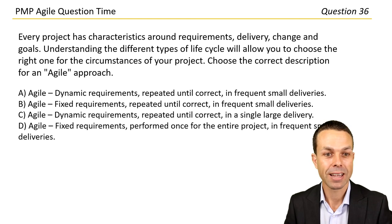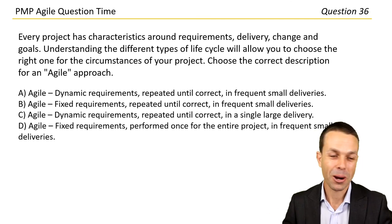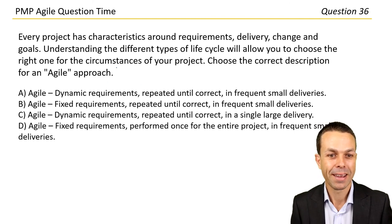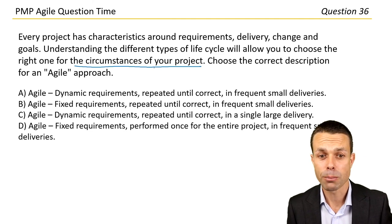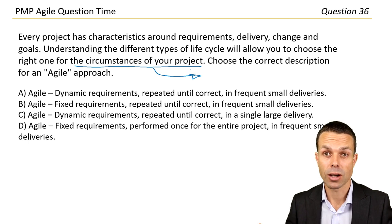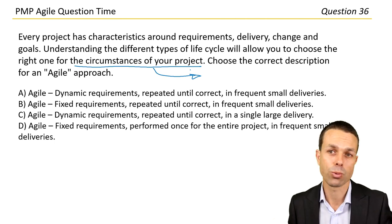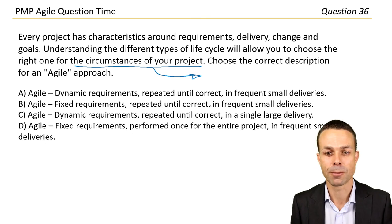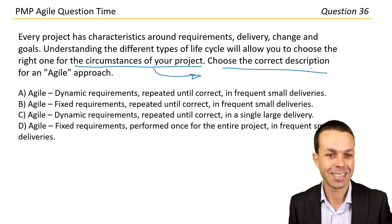Every project has characteristics around requirements, delivery, change, and goals. Understanding the different types of life cycle allows you to choose the right one for your project's circumstances — every project, organization, product, culture, and team will affect how the project is delivered. Choose the correct description for an agile approach.